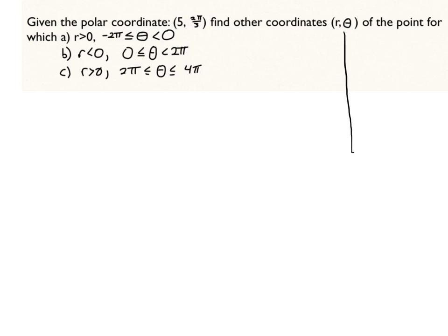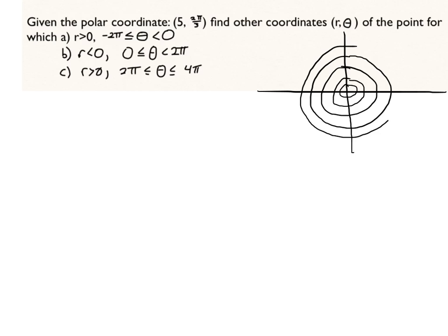So the first thing you need to do is draw your polar coordinate. So we have 5, so we need 5 rings, and 5. Then we need to place where 2π over 3 would be, which is about 120 degrees. So I draw that there. Now, the arrow that I draw represents the original angle. So that right there, and that point goes right there.